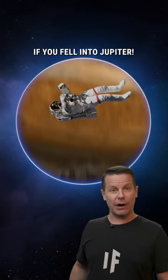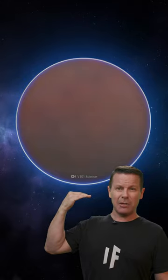Here's what would happen if you fell into Jupiter. Due to Jupiter's strong gravity, you'd be falling from the top of the atmosphere at nearly 180,000 km per hour.